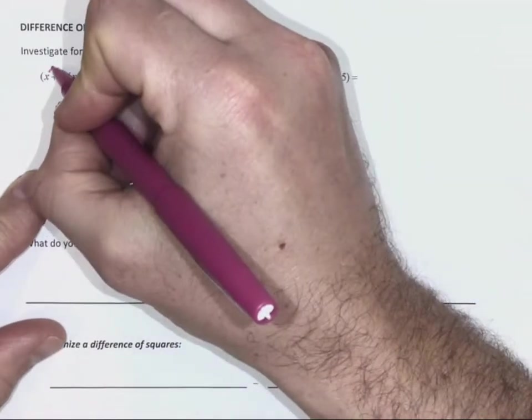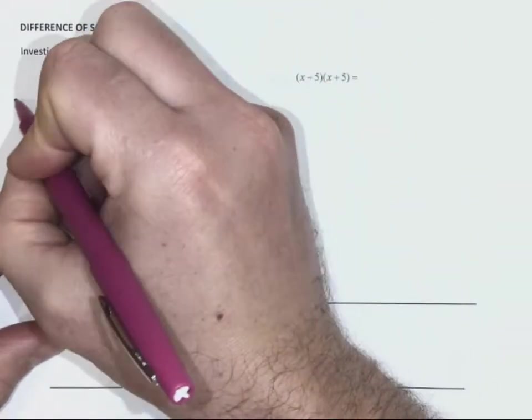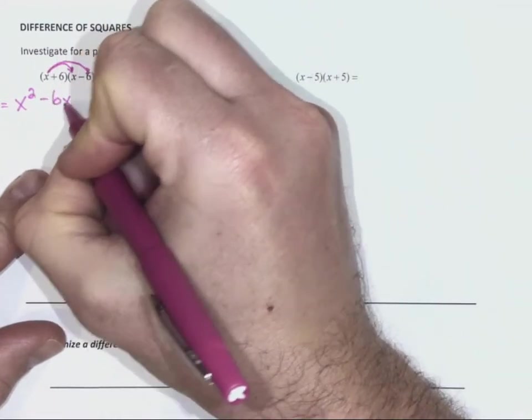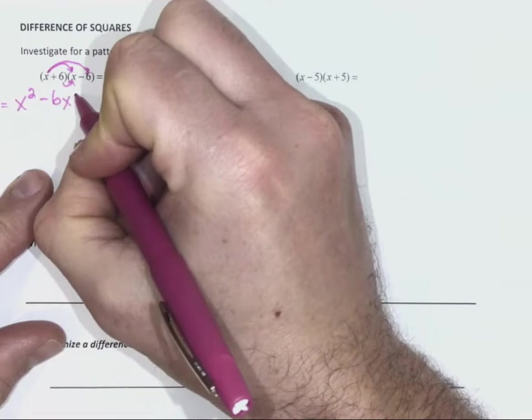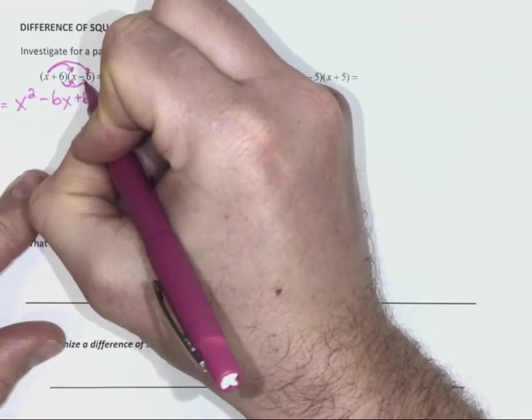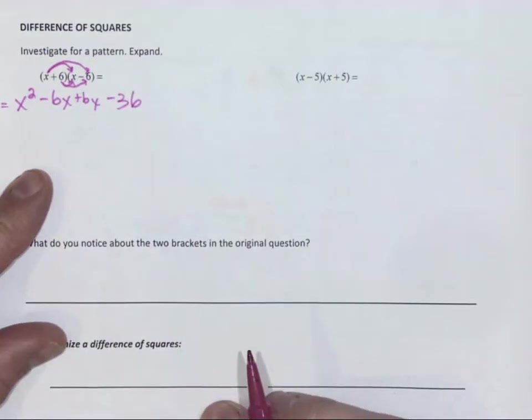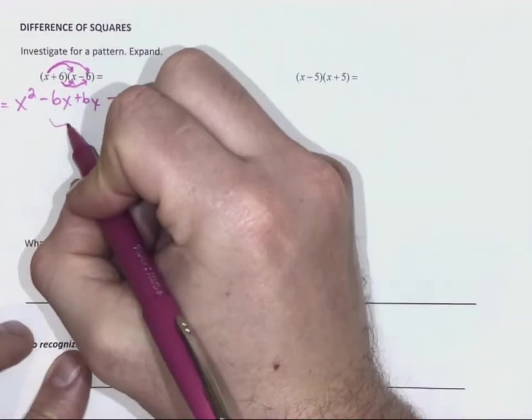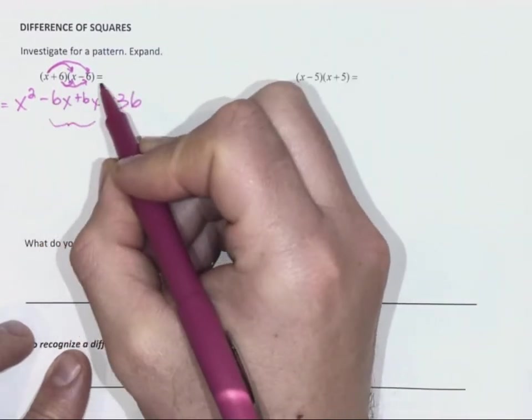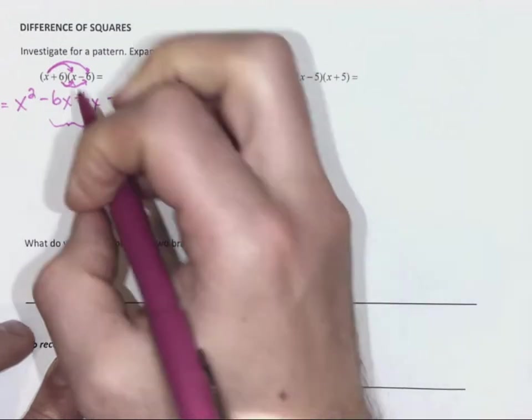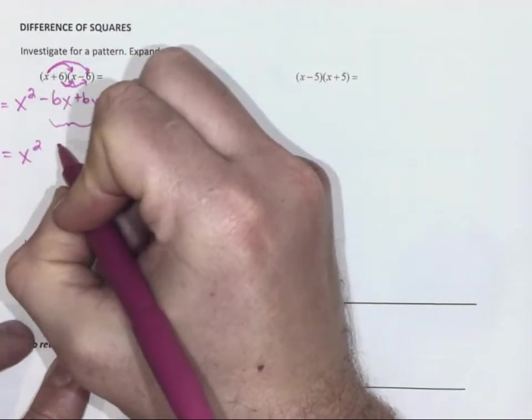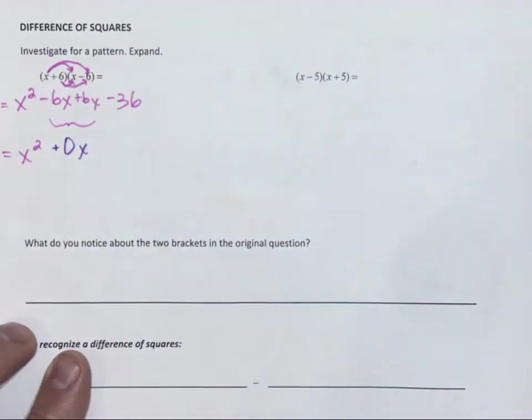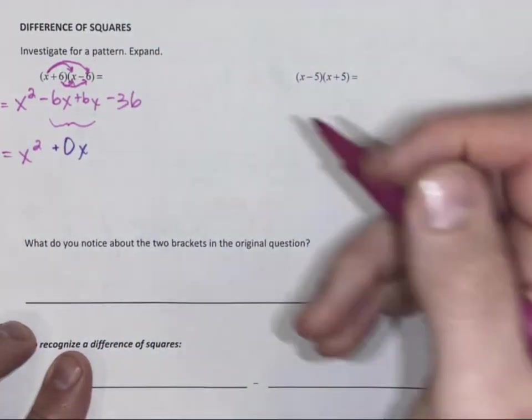If we were to expand, x times x is x squared. x times negative 6 is negative 6x, 6 times x is plus 6x, 6 times negative 6 is negative 36. As we continue to collect like terms, we notice that our x terms cancel out. Negative 6x plus 6x is zero x's. I'm going to put that in a different color just so we remember we don't actually need to show it. It's not there.